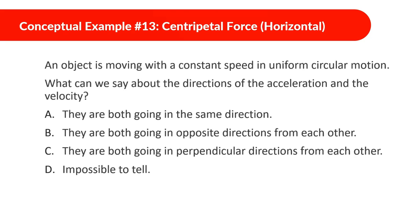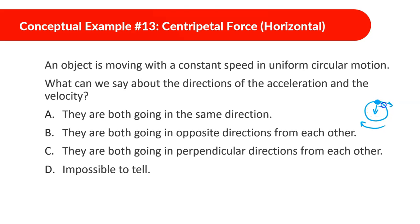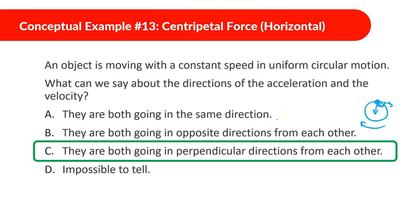An object is moving with constant speed in uniform circular motion. What can we say about the directions of the acceleration and the velocity? The centripetal acceleration is always pointed toward the center, and the velocity is always tangential to the circle. This means they form a 90-degree angle — they are perpendicular to each other.